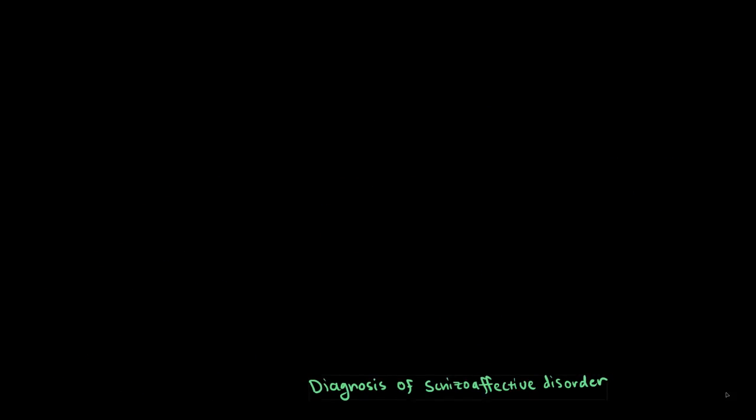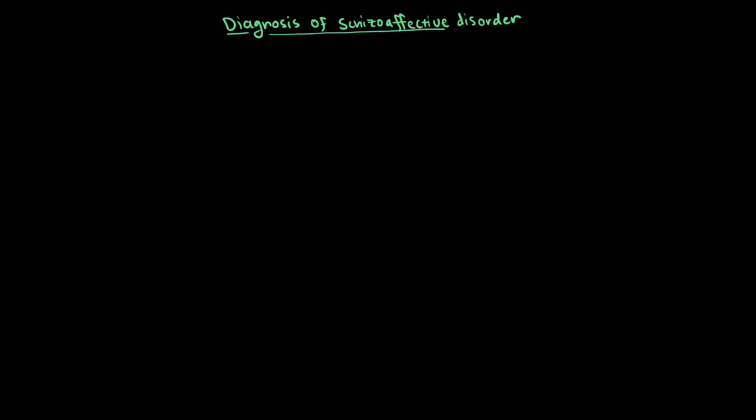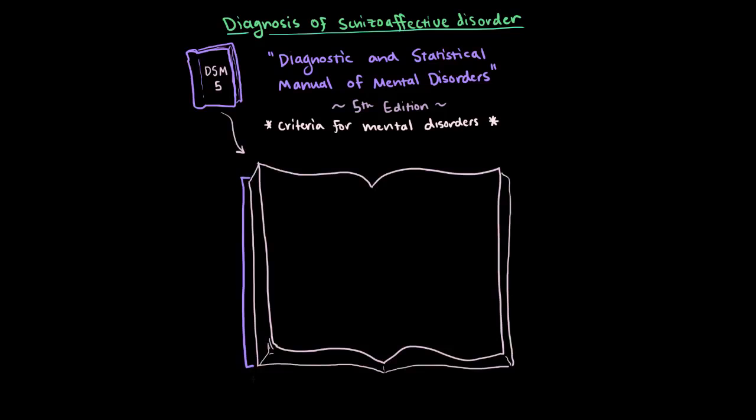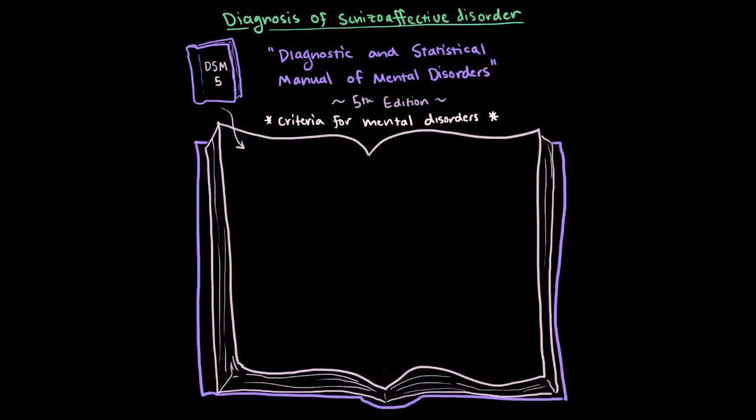What's pretty much universally used to help psychiatrists diagnose mental disorders is a book called the Diagnostic and Statistical Manual of Mental Disorders, the fifth edition, which is also frequently called the DSM-5. This helps psychiatrists look for certain specific criteria for patients to meet to be diagnosed with a particular disorder. If we page the section on schizoaffective disorder, we'll find several pieces of criteria to meet.